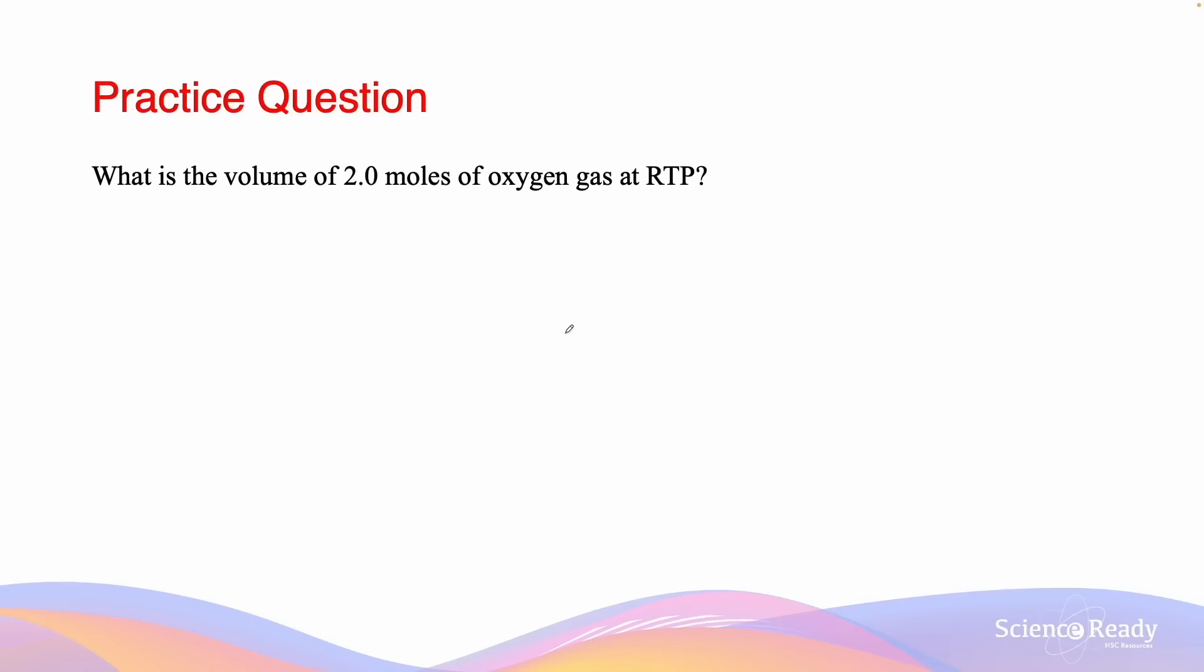Here we have a practice example for Avogadro's law. The question asks what is the volume of 2 moles of oxygen gas at RTP, which is room temperature and pressure. So it's important to recognize, and this is given to you on the datasheet, that at RTP, the volume of 1 mole of gas is equal to 24.79 liters. This means that for 2 moles, we have a total of 49.58 liters.